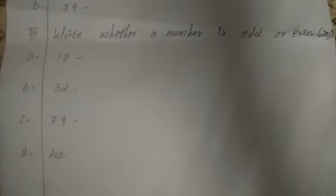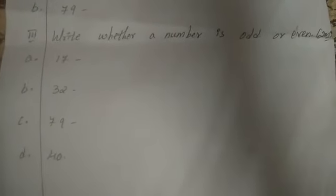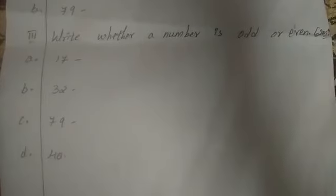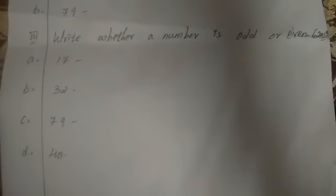Third one is, write whether a number is odd or even. First one is 17, second one 32, 79 and 40. You have to write even or odd.